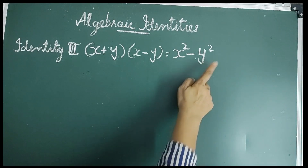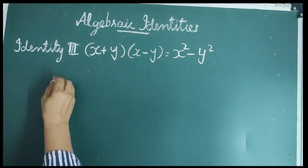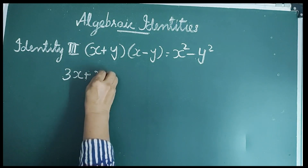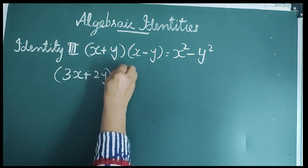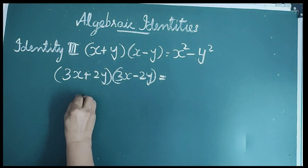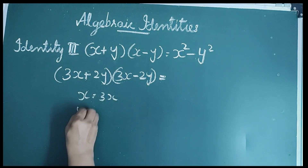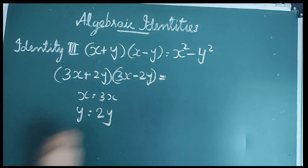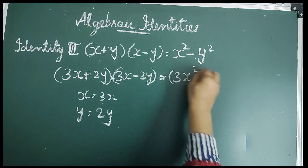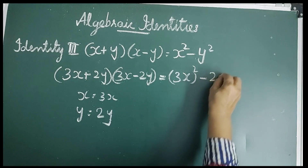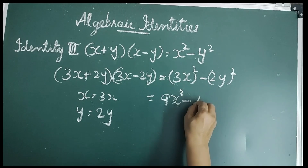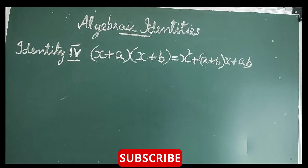Let us consider an example: (3x + 2y)(3x − 2y). Here x = 3x and y = 2y. Then x² − y² gives (3x)² − (2y)², which equals 9x² − 4y².